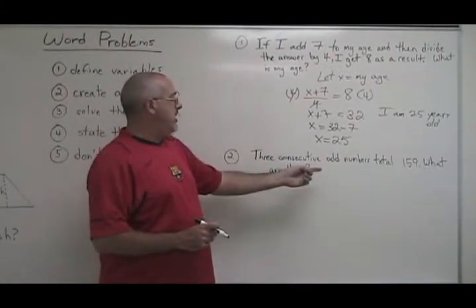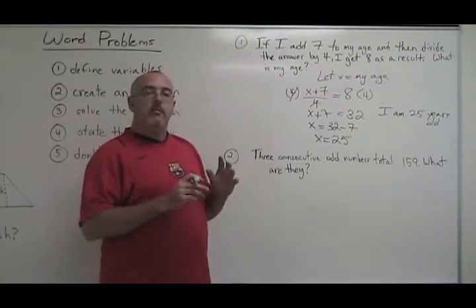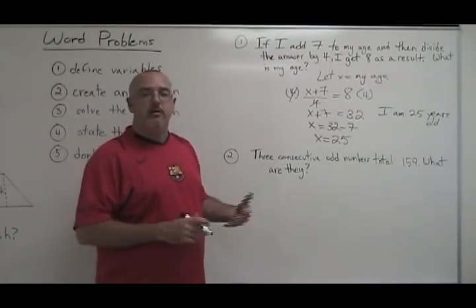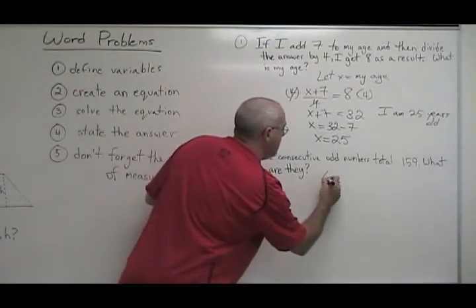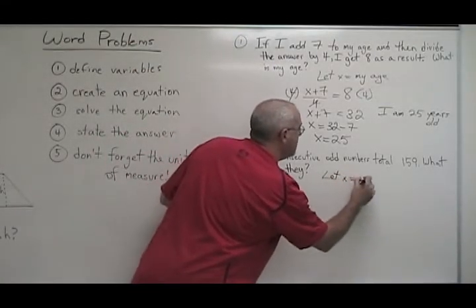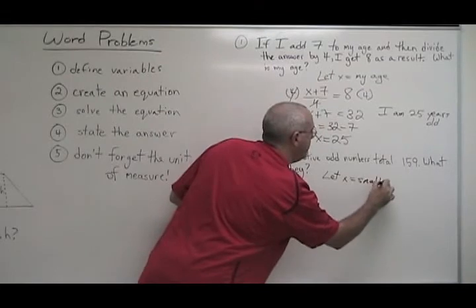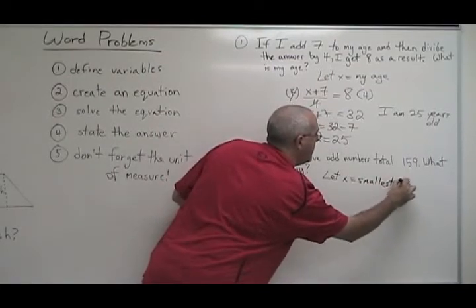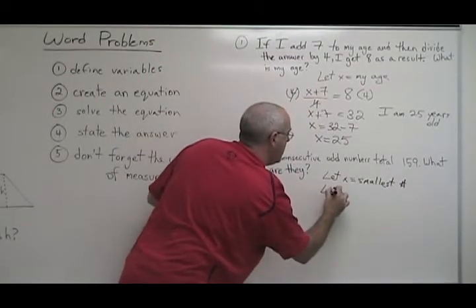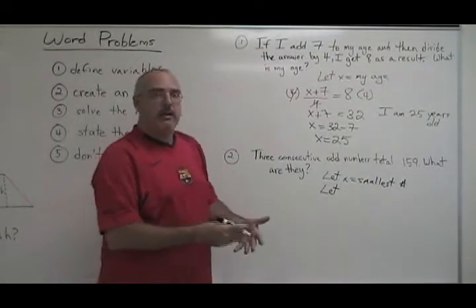My hint is, when you define the variables, make x equal to the smallest of your unknowns. So I will say, let x equal smallest number. Then, since there are more unknowns, I have to express them as x.